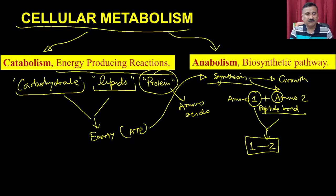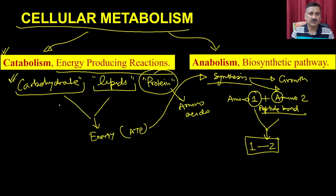Let us start first with catabolic reactions, beginning with carbohydrate metabolisms. We will briefly discuss carbohydrate metabolism, then lipid metabolism, mostly the catabolic reactions. Then we will discuss anabolic reactions, and at the end we will discuss how cellular metabolism handles the toxic products produced during catabolic or anabolic reactions.